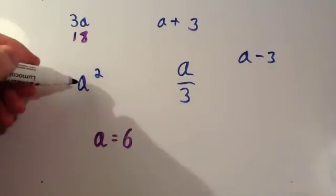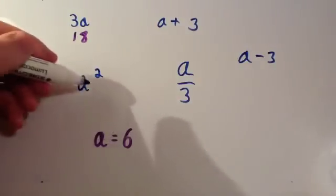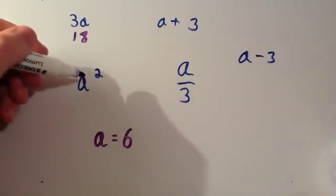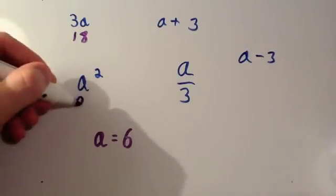a squared, well, that means a multiplied by itself. Well, a is 6. So you're going to do 6 multiplied by itself, 6 squared. 6 times 6 is 36.